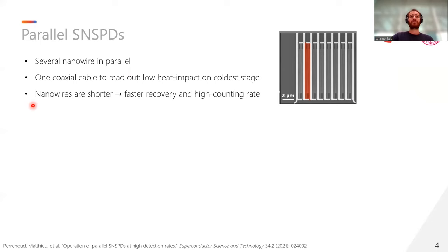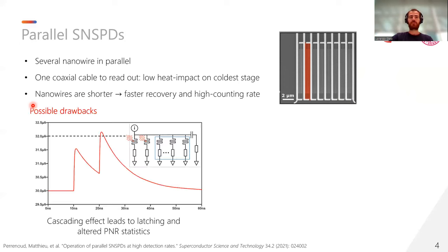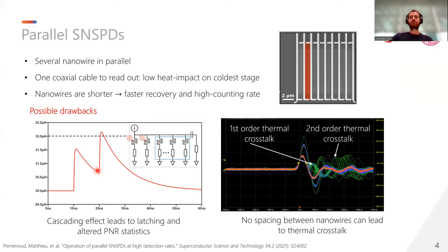However, if the parallel SNSPD is not designed in an optimal way, there can be some drawbacks. First is that after one of the pixels clicked, the current is going to be redistributed among the other nanowires. And what could happen is that the current exceeds the critical current, and therefore it's going to switch to the resistive state, leading to a cascading effect that in the end can bring the overall detector into a latching state, altering the PNR statistic. Also, the detector can suffer from thermal crosstalk. Namely, after one pixel is clicked, the heat that it generates can propagate towards the adjacent pixel, making them turn into a resistive state again. And we can see here first order, second order thermal crosstalk.